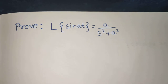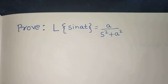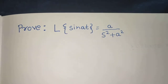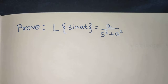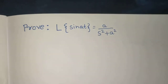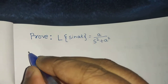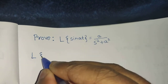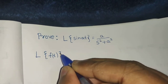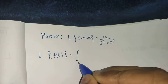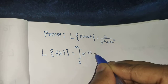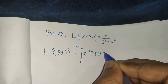Hello everyone, let's solve another Laplace transform question. In this problem we need to show that the Laplace of sine at is equal to a upon s squared plus a squared. We know that the Laplace of F(t) is equal to the integral from 0 to infinity of e to the power minus st into F(t) dt.